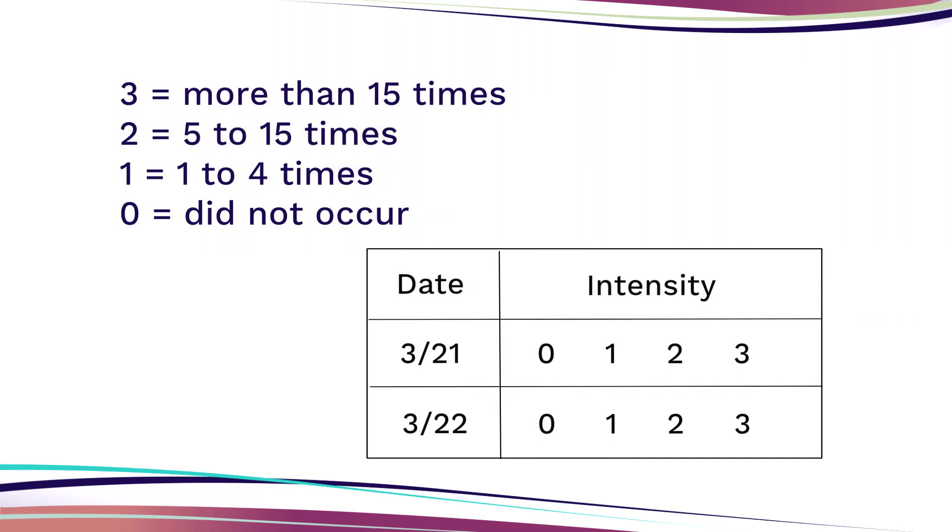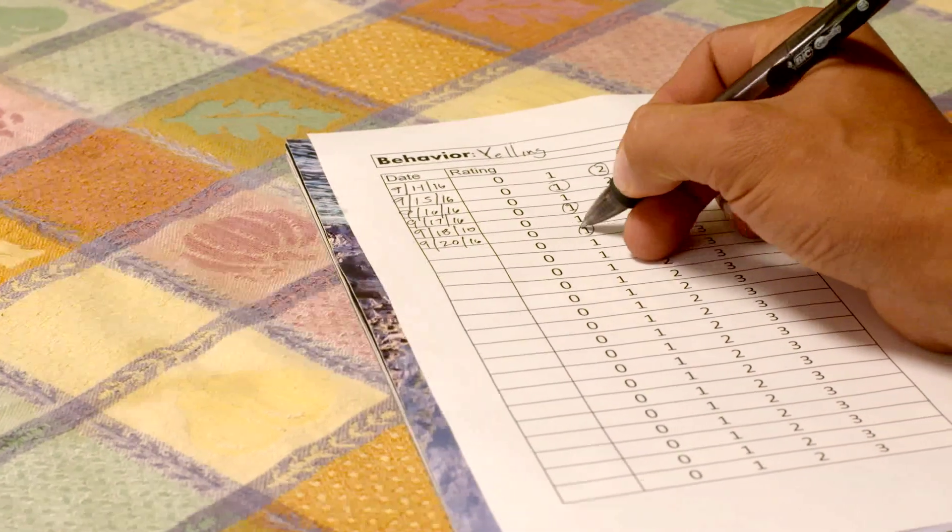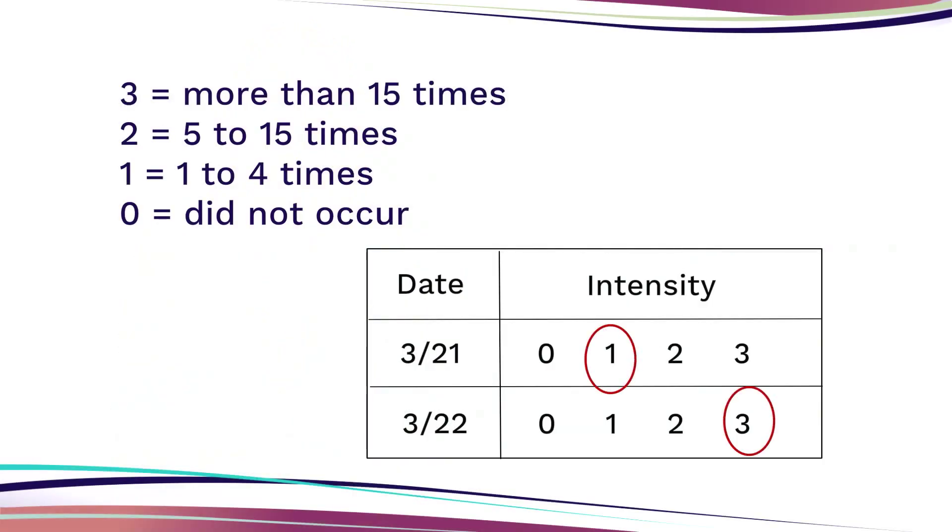When we rate behavior, we use a simple scale that indicates different levels of the behavior — for example, from poor to excellent, or mild to severe. Ratings are helpful when we are concerned about how well a child is doing or how serious a behavior is. We can also use number ratings to estimate the frequency of behavior, so we do not have to count every single occurrence — just make our best guess. Here is an example of how to rate behavior.